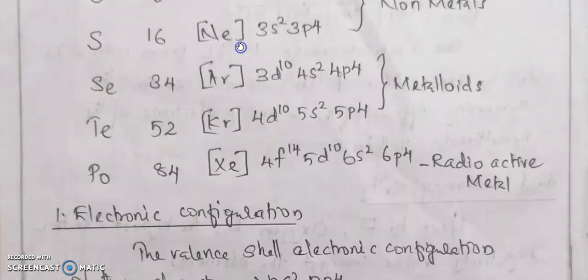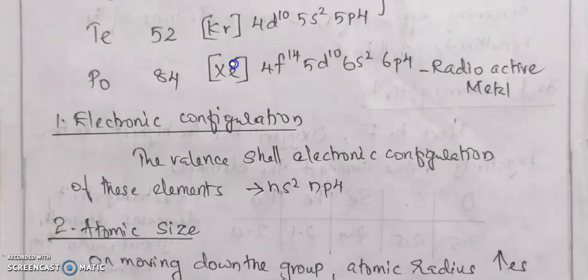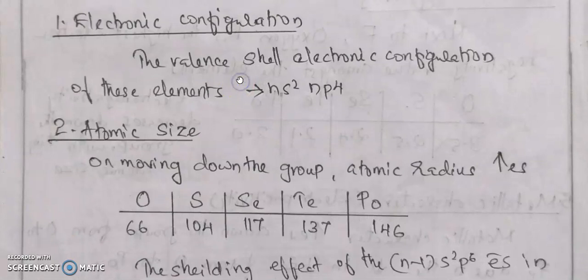The general valence shell electronic configuration of these Group 16 elements is ns² np⁴. Regarding atomic size, moving down the group the atomic radius increases. Oxygen has an atomic radius of 66 pm, sulfur 104 pm, selenium 117 pm, tellurium 137 pm, and polonium 146 pm.